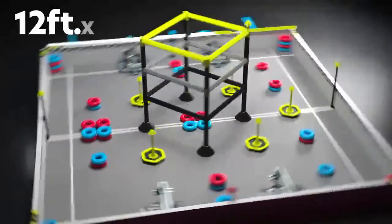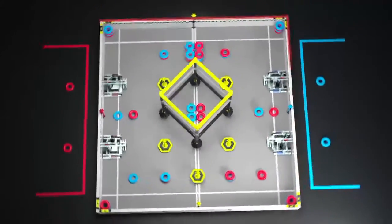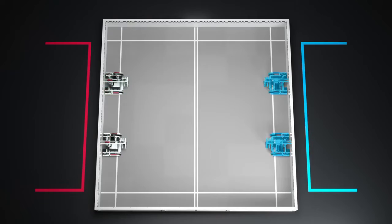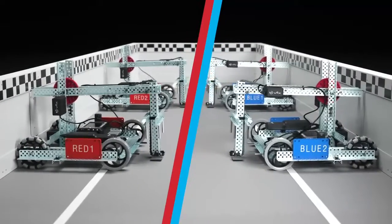High Stakes is played on a 12 foot by 12 foot field by two alliances, one red and one blue, made up of two teams each.